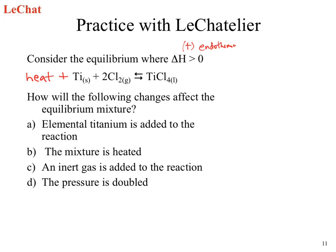How will the following changes affect the equilibrium mixture? If we're concerned about how it's going to affect the equilibrium mixture, what's another piece of information that might be useful? If we're at equilibrium, what is true? K equals the concentration of our products over the concentration of our reactants.